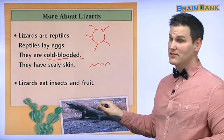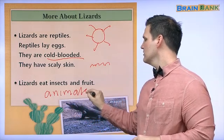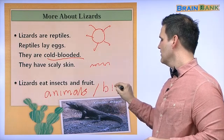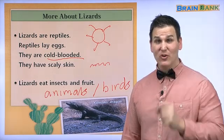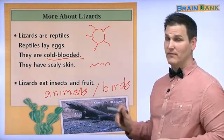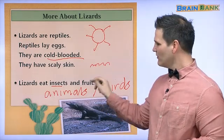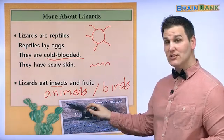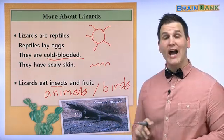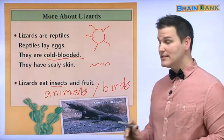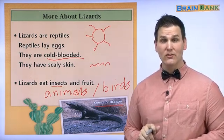And lizards eat insects and fruit. Some lizards, like this lizard, also eat animals and birds. This is a very big lizard, maybe bigger than you. Do you eat insects and fruit? No, you don't eat insects, but fruit. And this very big lizard is a very special kind of lizard. He lives on the island of Komodo. And his name is Komodo Dragon. He's the biggest lizard of them all.